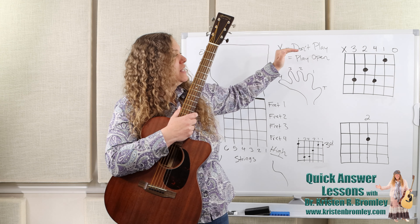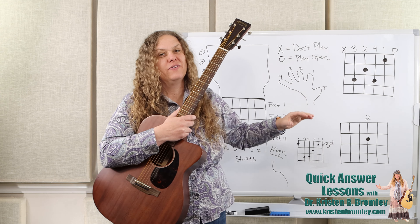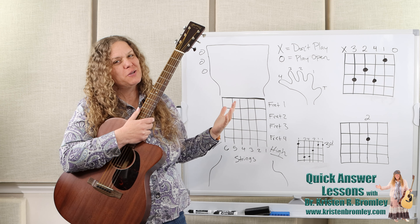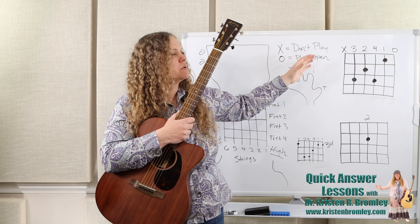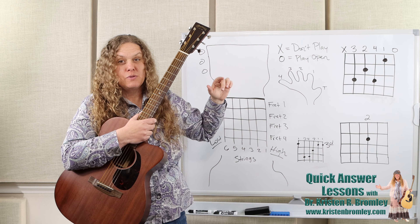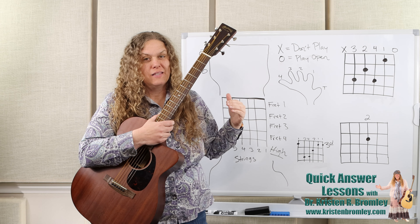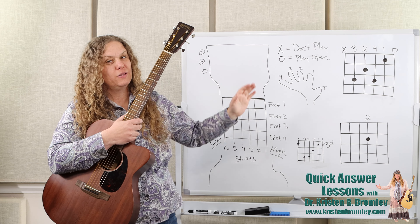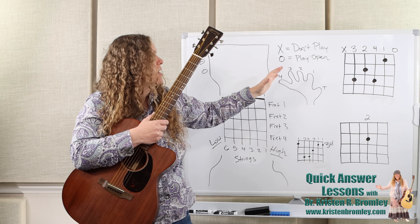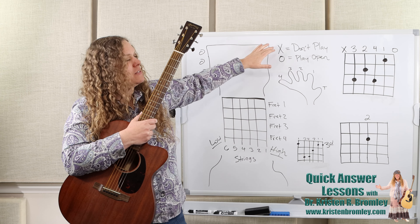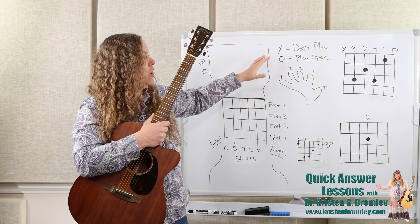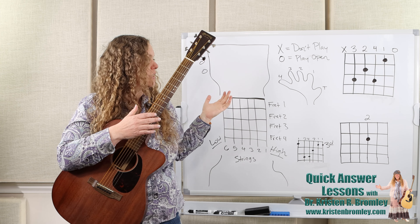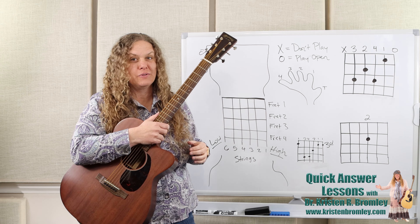Up above the tablature diagram we'll have numbers — or it might have numbers; sometimes you don't get this at all, but we usually do. And sometimes we'll also have an X telling us not to play that string. X means don't play that string. O means play that string open, without any fingers on it.